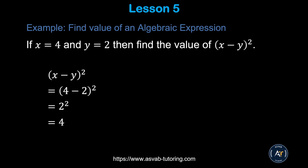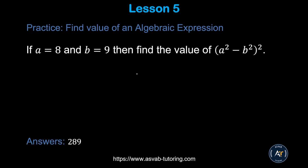Here is another example using the same approach — plug in the values of x and y and simplify. For instance, 4 minus 2 is 2 squared, which gives you 4. Pause the video and try the practice problem by yourself to make sure you get the correct answer.